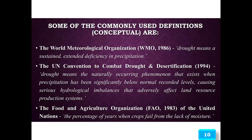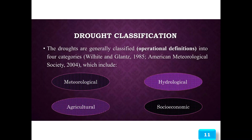Some commonly used definitions of drought: The conceptual definition — drought means a sustained, extended deficiency in precipitation — is given by the World Meteorological Organization (1986). The UN Convention to Combat Drought and Desertification (1994) defines drought as a naturally occurring phenomenon that exists when precipitation has been significantly below normally recorded levels, causing serious hydrological imbalances that adversely affect land resources. The Food and Agriculture Organization (FAO, 1983) defines it as the percentage of years when crops fail due to lack of moisture.